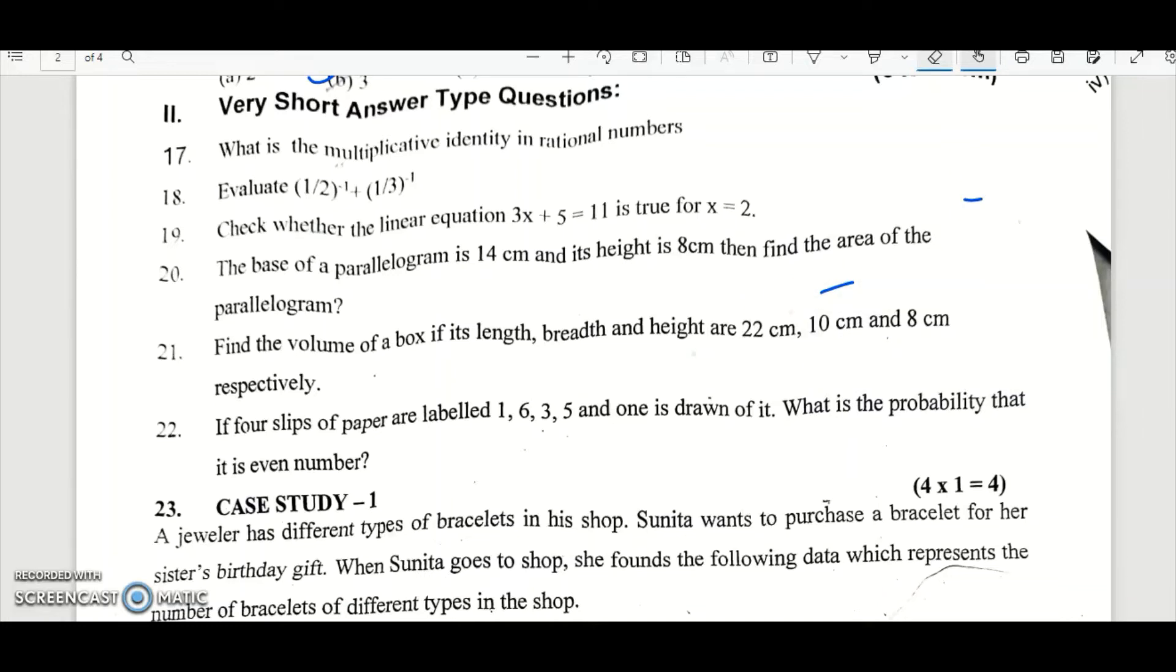Next one is find the volume of a box of 22 centimeters, 10 centimeters, 8 centimeters. So the formula for area of parallelogram is area equal to W, B, H. That is width, breadth, height. So width is 22 centimeters, into breadth is 10 centimeters, into height is 8 centimeters. That is 220 into 8, that is 1760 cube centimeter. So this is the area.